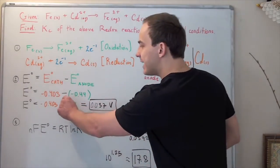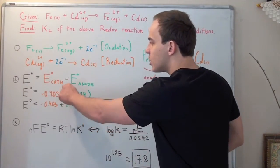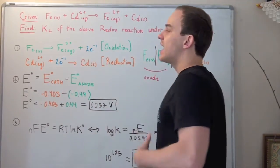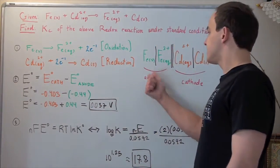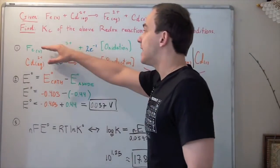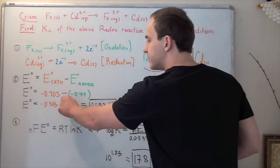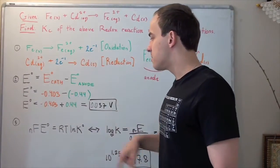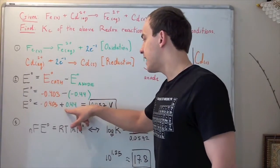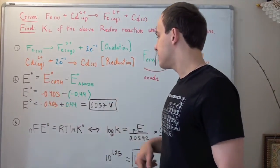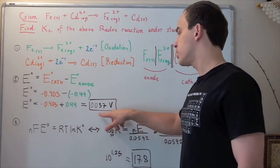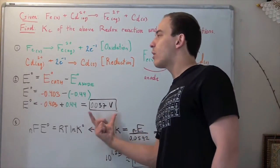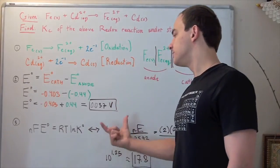I put this negative here because we want to convert this to an oxidation, since at the anode, oxidation, not reduction, occurs. These negatives become a positive, and we add negative 0.403 to positive 0.44, giving us 0.037 volts. This is our cell voltage.